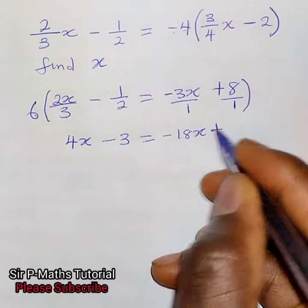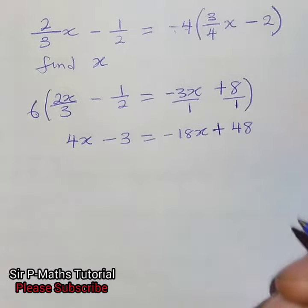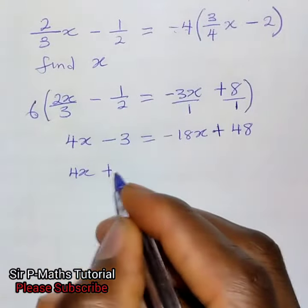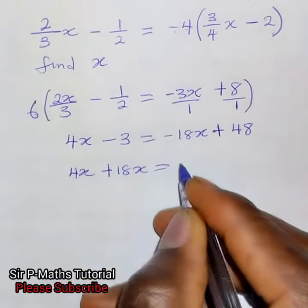Then we collect like terms. I'll have 4x, 18 will cross over plus 18x equal to 48.